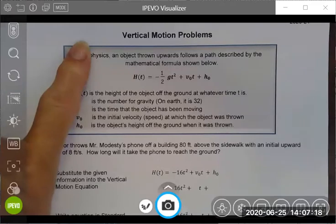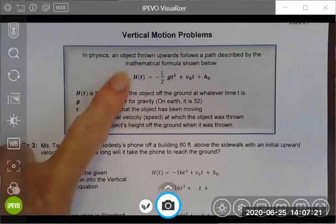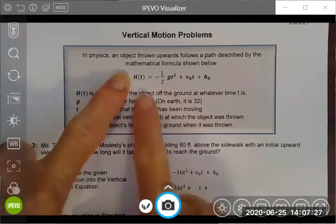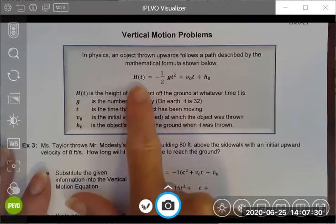You'll talk about these in physics as well. There is this wonderful formula that can be used on any planet, and it says the height of an object after t seconds is equal to negative one-half the gravitational force times the time squared.